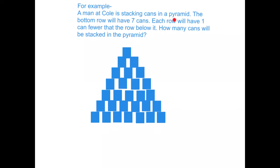Now let's have a look. It should look like a pyramid — yes, this looks like a pyramid. The bottom row has seven cans — good. And each row is going to have one less. Is that right? Yes. Now, how many cans can be stacked? Now I can count them: seven, eight, nine, ten, eleven, twelve, thirteen, fourteen, fifteen, sixteen, seventeen, eighteen, nineteen, twenty, twenty-one, twenty-two, twenty-three, twenty-four, twenty-five, twenty-six, twenty-seven, twenty-eight. The answer is twenty-eight.